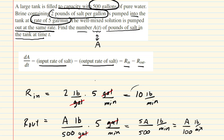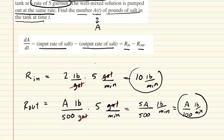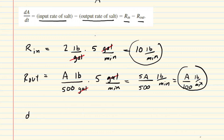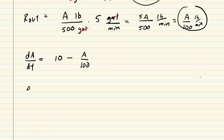We have the input rate and the output rate, so let's combine them into the final differential equation. We have dA/dt equal to the input rate of 10 minus the output rate, which is A over 100. We can also rewrite A over 100 as one-hundredth times A. So we have this form of our differential equation, and now we have to solve it.